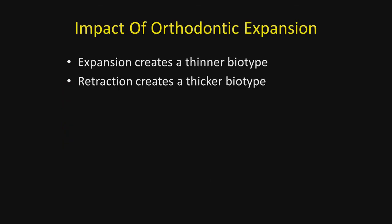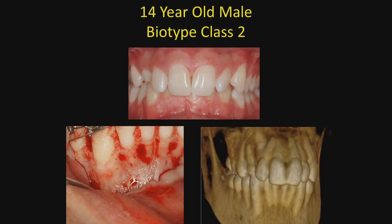Now let's talk about the impact of orthodontic expansion. If we expand the arch, then we're going to get a thinner biotype. However, if we retract the teeth, we're going to get a thicker biotype.